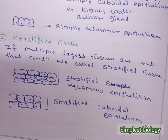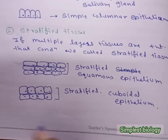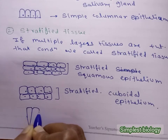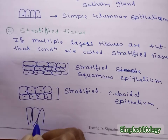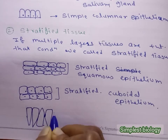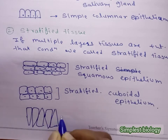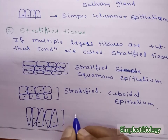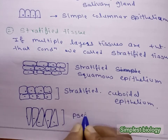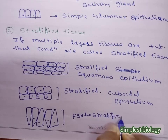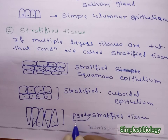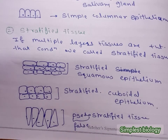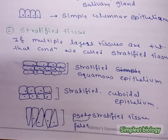Columnar epithelium in multiple layers is generally not found, but in some conditions tissues appear layered on one side while being broader on the other, creating a false structure where columns appear triangular. Because it looks like multiple layers but is not truly so, these tissues are called pseudostratified tissue — 'pseudo' meaning false. We have now divided epithelial tissues here.